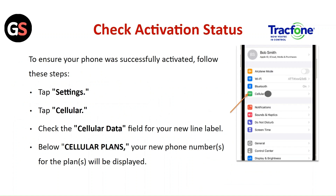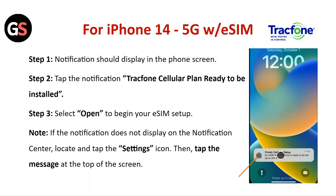Step 10 — Check Activation Status: to ensure your phone is successfully activated, follow these steps. Tap on Settings, then tap on Cellular, then check the Cellular Data field. For the new line label, below Cellular Plans, your new phone number for the plan will be displayed.